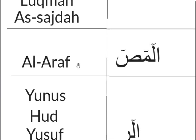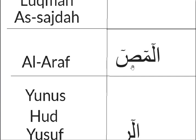The next combination, Alif, Lam, Mim, Sad, appears only in one surah — Al-A'raf. Again, Lam is 6 harakat, guna 2 harakat, then Mim 6 harakat. No guna in between, then Sad — 6 harakat with the D. Qalqalah at the end.